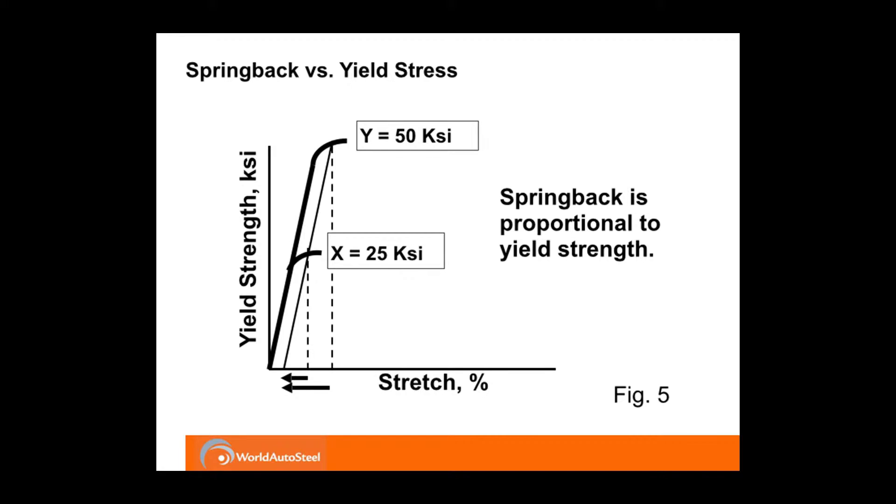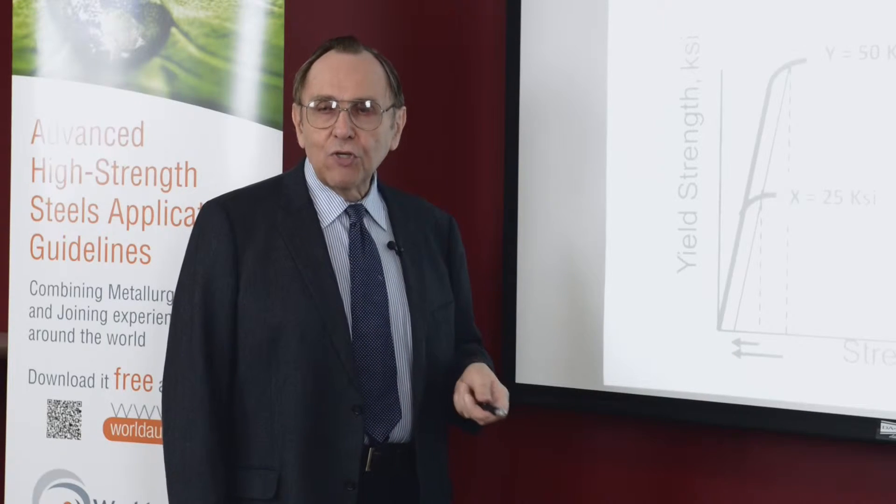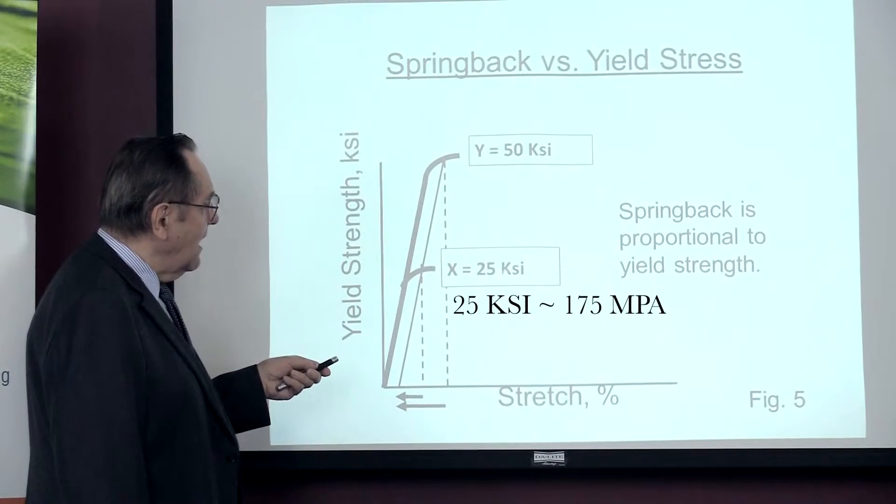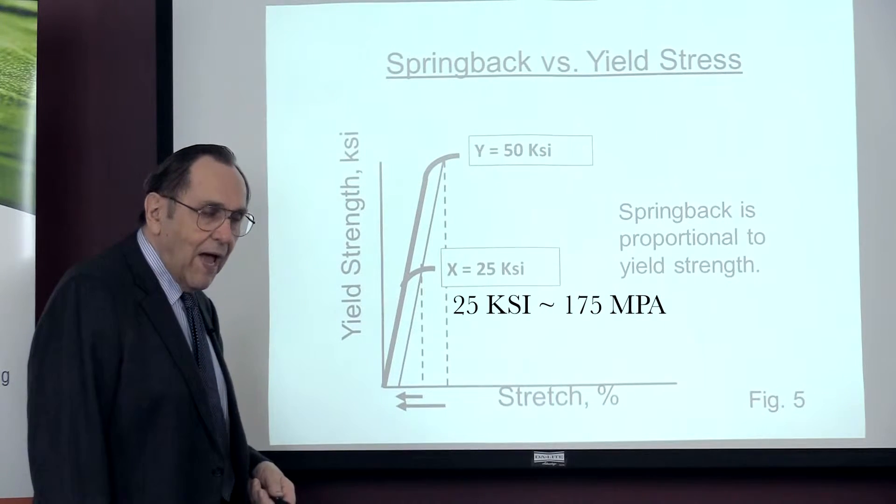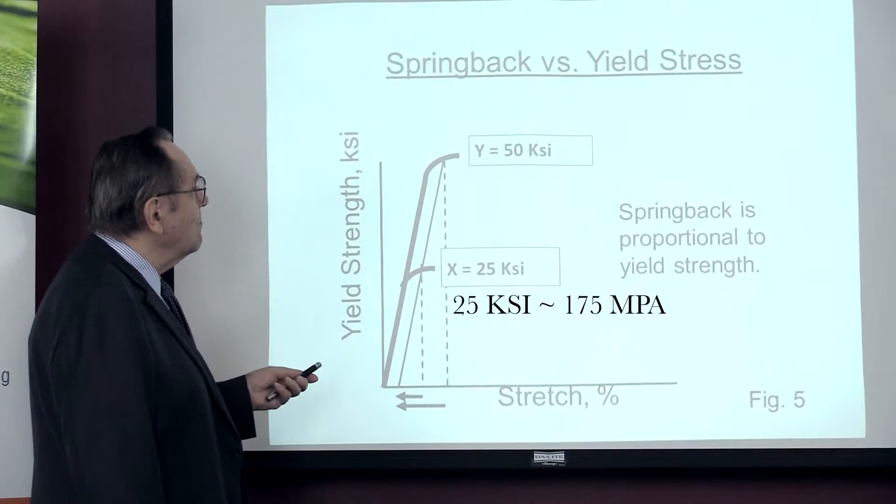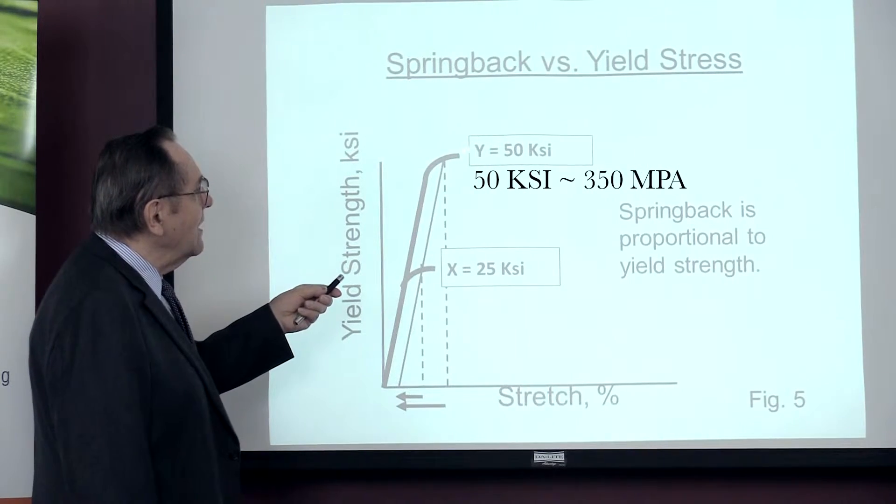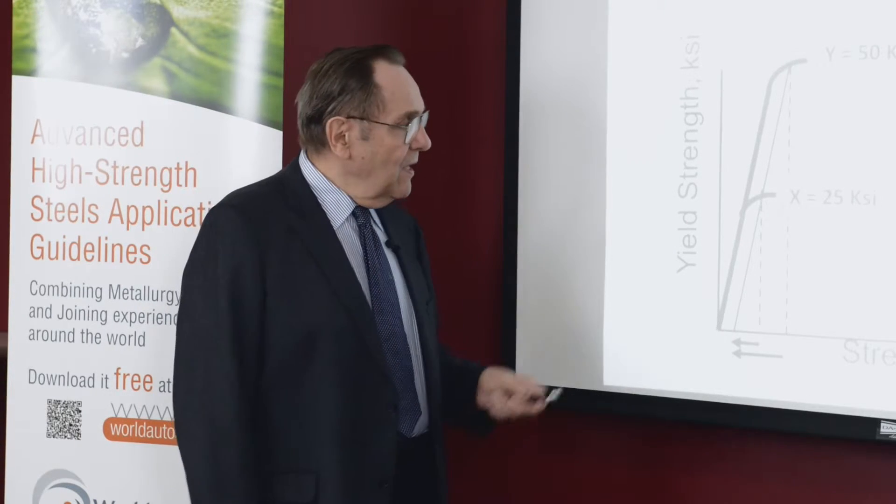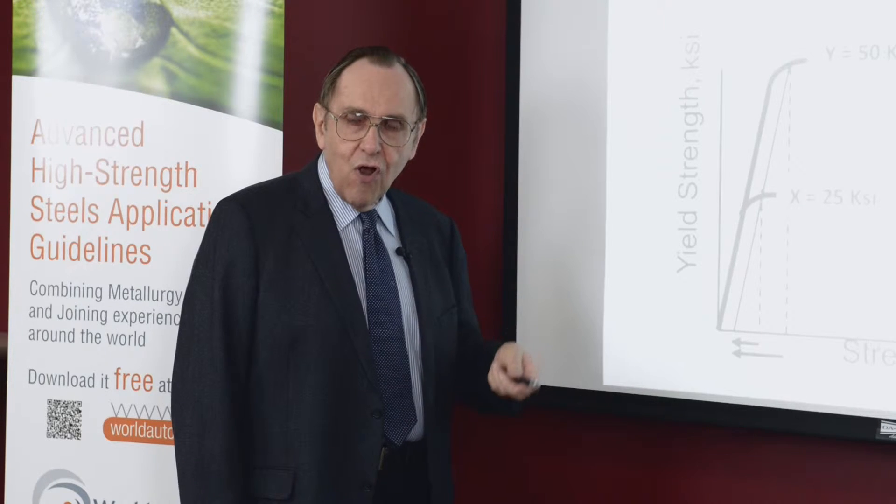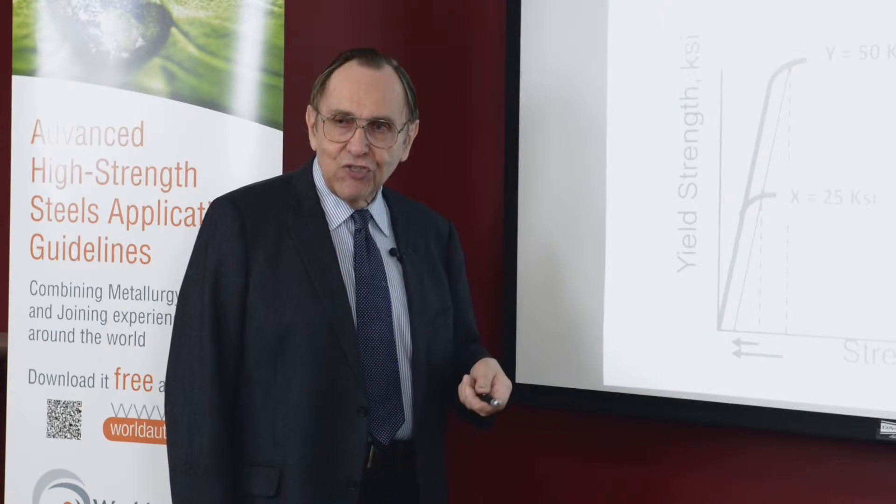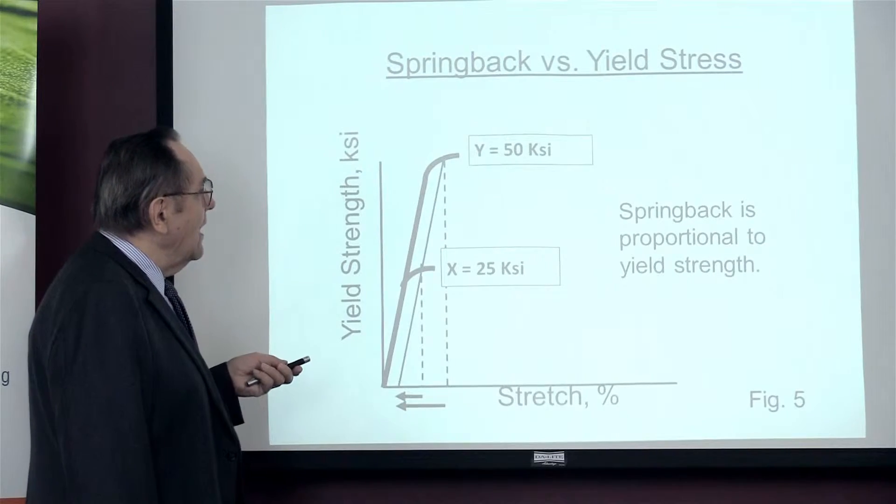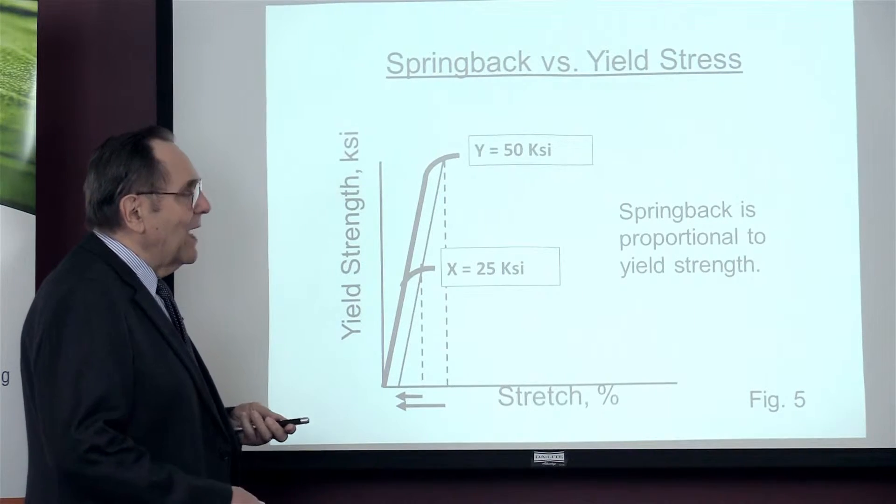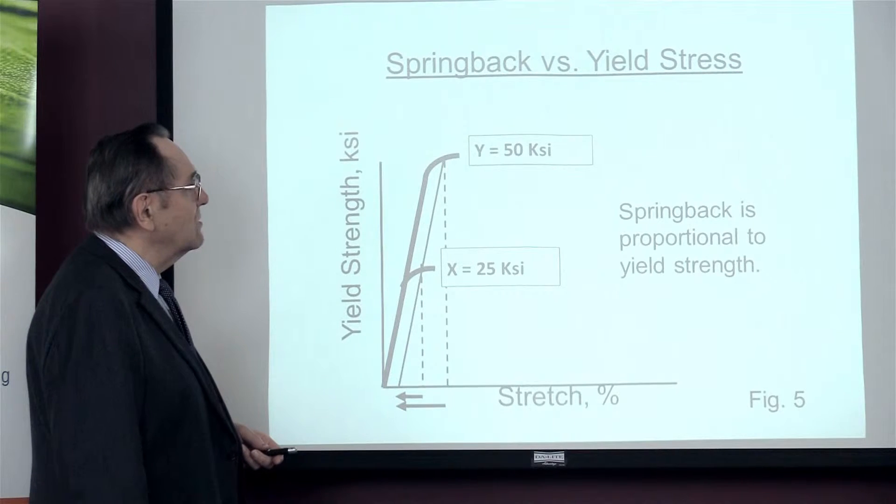Now the springback, fortunately for us, is proportional to the yield strength. So if we have a yield strength of 25 ksi, and we have a certain amount of springback, we double to a higher strength metal, and we come up to 50 ksi, and now we have doubled the amount of springback. So as the steel gets stronger, springback increases, your residual stresses are increasing, and you have to pay more attention to how you correct these things and get back to the dimensional specifications that the customer wants.